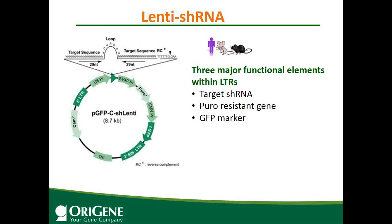For lentiviral shRNA: the 5' LTR and 3' LTR flank the sequence that will be packaged into viral particles. There are three major functional elements within the LTRs — the shRNA is under U6 promoter, there is a puromycin resistance gene, and there is also a GFP reporter. Therefore, in your transduced cells, it will express your target shRNA, and you can use puromycin to select stable cells. Your transduced cells will be green.